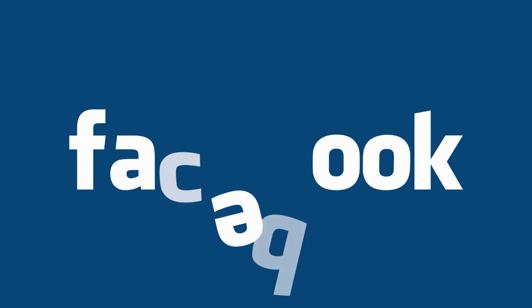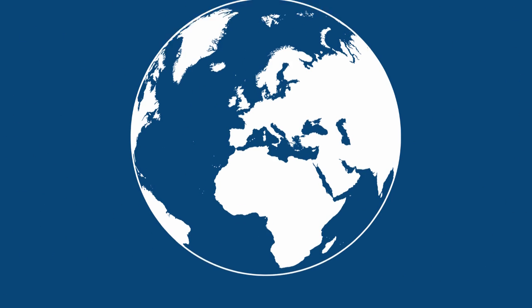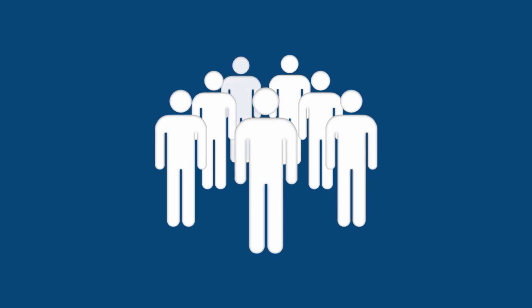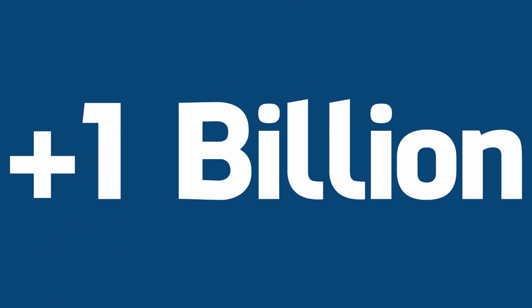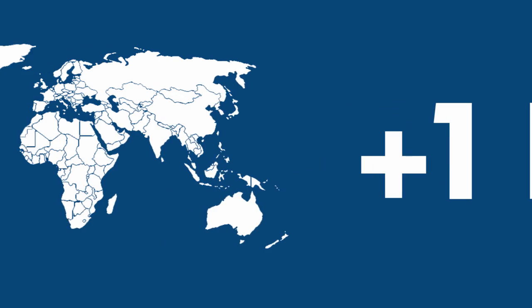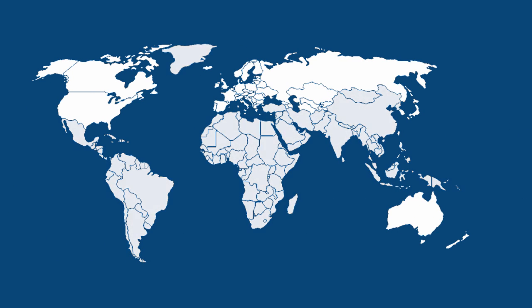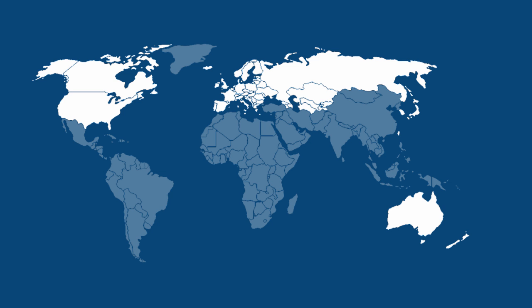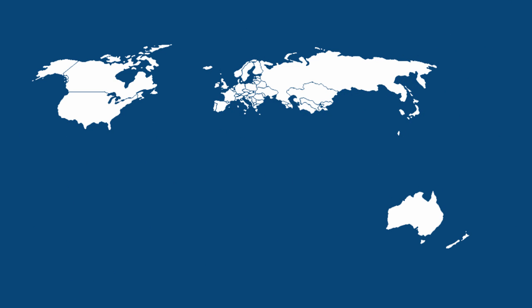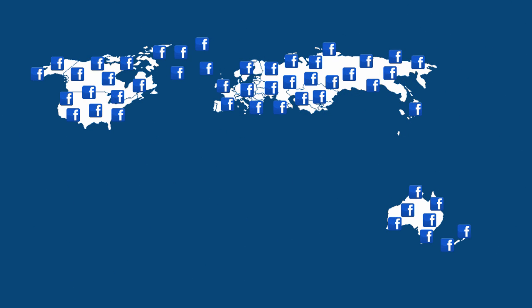Facebook — love it or hate it, it's an online global phenomenon. One in seven people worldwide now has a Facebook account; that's over a billion people. To put that into context, that's the same population as the economically developed world — the same people with regular access to online resources such as Facebook. That means any one of those people could potentially see your information if you don't restrict who can see your content.